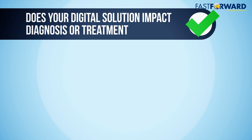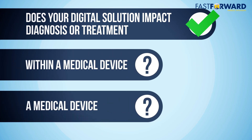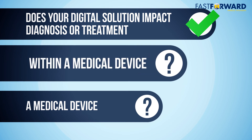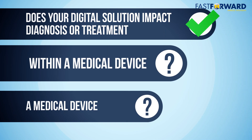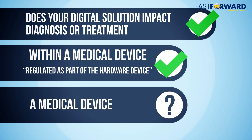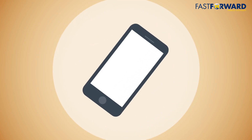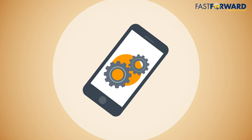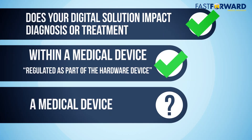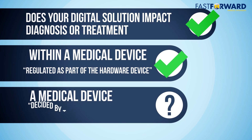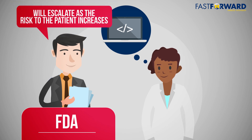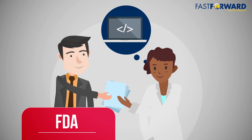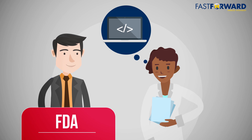If your technology most likely requires FDA regulation, how is it regulated? Is your digital solution within a medical device? Does it drive hardware that accomplishes the intended purpose? For example, software driving an IV infusion pump on its own does not have any effect unless it is coupled with an IV pump. If the answer is yes, the software will likely be regulated as part of the hardware device. Alternatively, is the software itself classified as a medical device? For example, a mobile app that can take a picture of a mole and make a diagnosis or recommendation would be classified as a medical device. If your digital health technology is regulated by the FDA as a medical device, the regulatory pathway will be decided by the intended use and indications for use of the technology. The amount of FDA regulatory oversight will escalate as the risk to the patient increases. The FDA has released several guidance documents to help you understand and identify exactly where you fall within the spectrum of regulation.